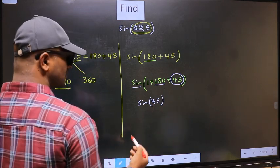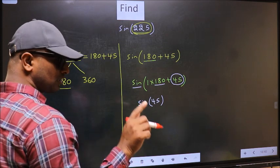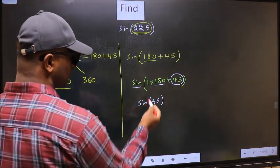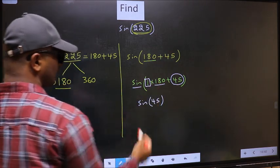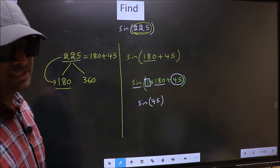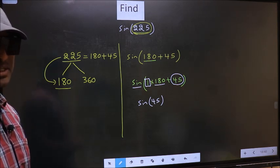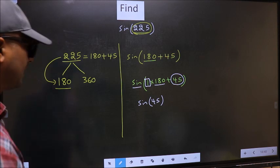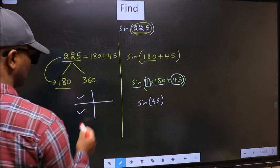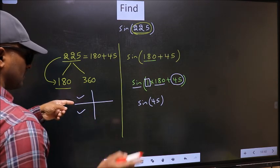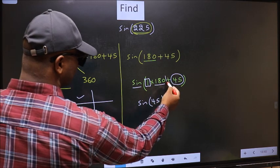Now the question is, will we get here plus or minus? To answer that, we should look at the number before 180, that is 1. 1 is odd, and all the odd multiples of 180 lie in either the second or third quadrant. To select the quadrant, we should look at this symbol.